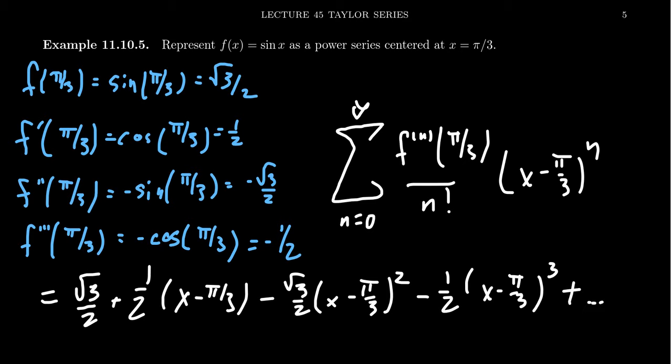I forgot the n factorials — I told you not to do that and then did it myself. They don't start picking up until the second term because 0 factorial and 1 factorial are both 1. So you get a 2 factorial in the third term — that's a factor of 2 there — and a 3 factorial in the fourth term, giving a factor of 6. So you can write those denominators as 4 and 12 respectively, or leave it factored.